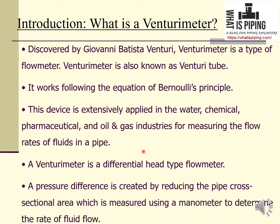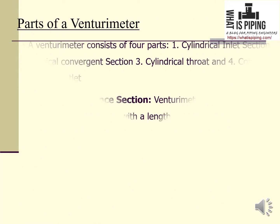A venturimeter is a differential head type flow meter, meaning that a pressure difference is created by reducing the pipe cross-sectional area, which is measured using a manometer to determine the rate of fluid flow.